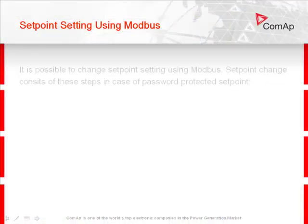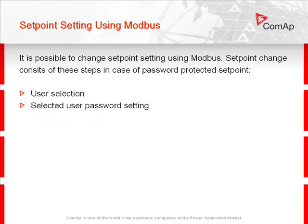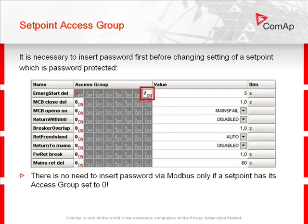Setpoint setting using Modbus. It is possible to change a setpoint setting using Modbus. A setpoint change consists of these steps in the case of a password-protected setpoint: user selection, selected user password setting, and setpoint change. It is necessary to insert the password first before changing a password-protected setpoint.